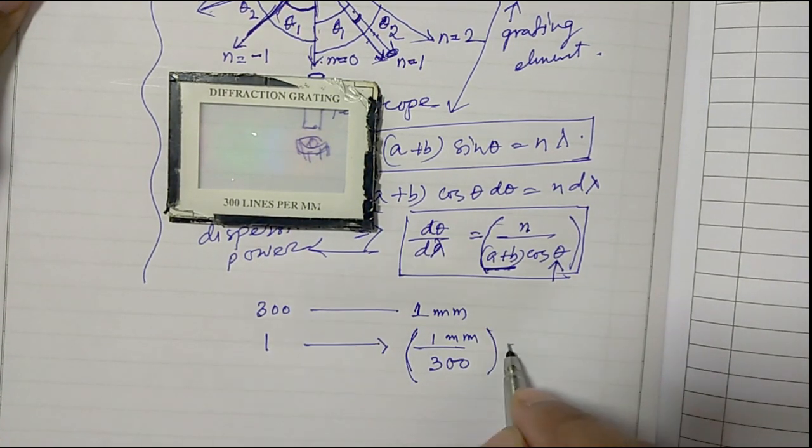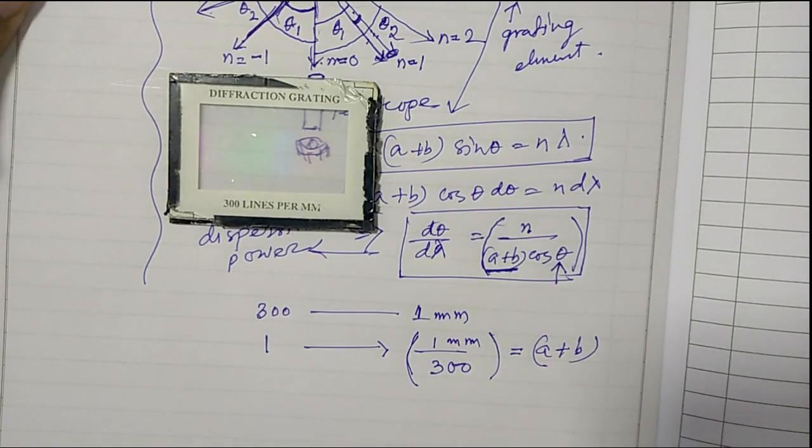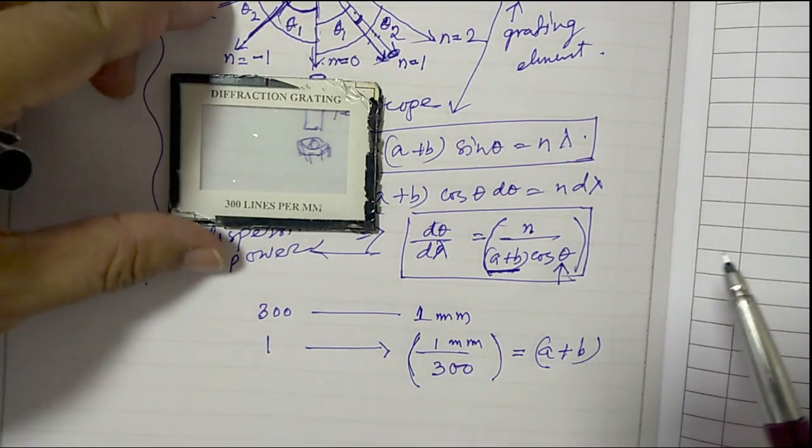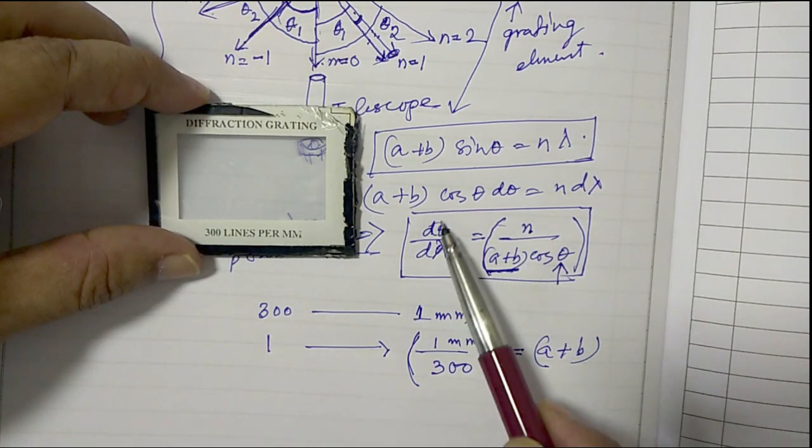One divided by 300 millimeters. So we will use this a plus b value in here and we will calculate d theta by d lambda.